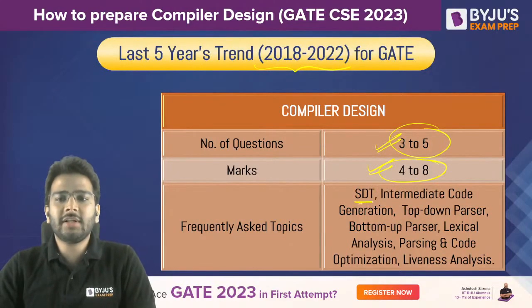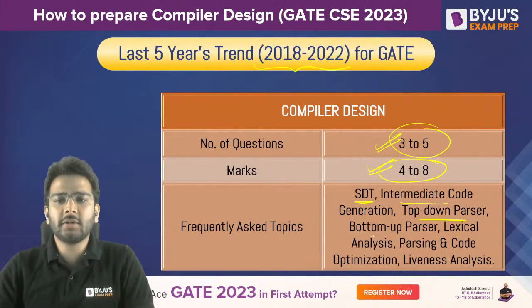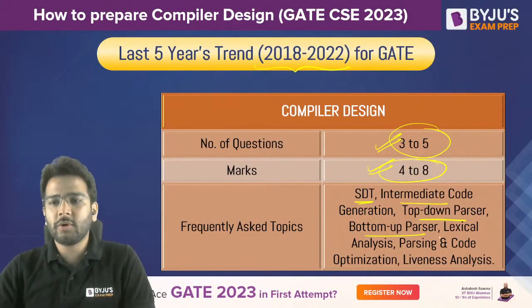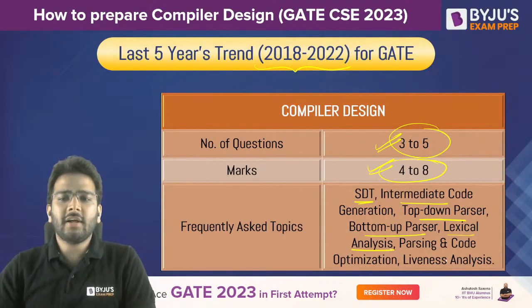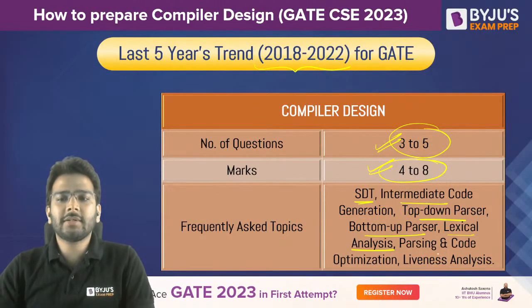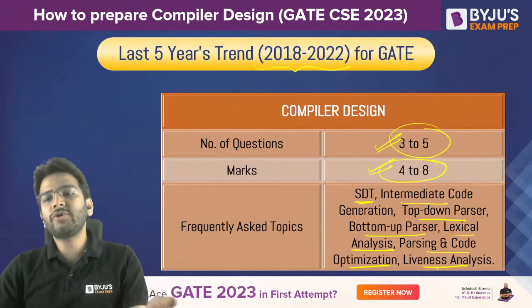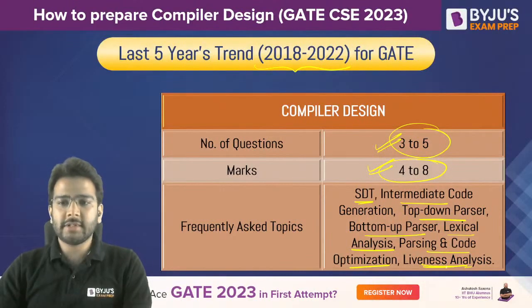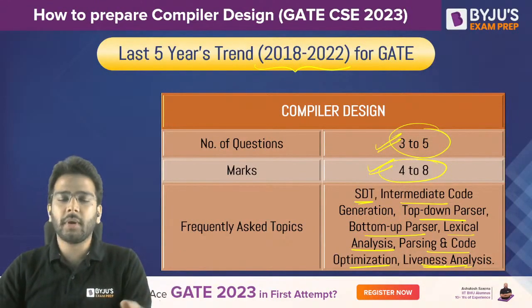What are the frequently asked topics? We have SDT — syntax directed translation; intermediate code generation phase; top-down parser with questions from LL(1) parser; for bottom-up parsers, mostly questions are from LR parsers — we have four LR parsers; lexical analysis, where they generally ask questions on finding the number of tokens; and code optimization and liveness analysis, which is very important. From GATE 2021 onwards, liveness analysis has been officially mentioned explicitly in the syllabus, and in GATE 2021 they asked a question based on that.